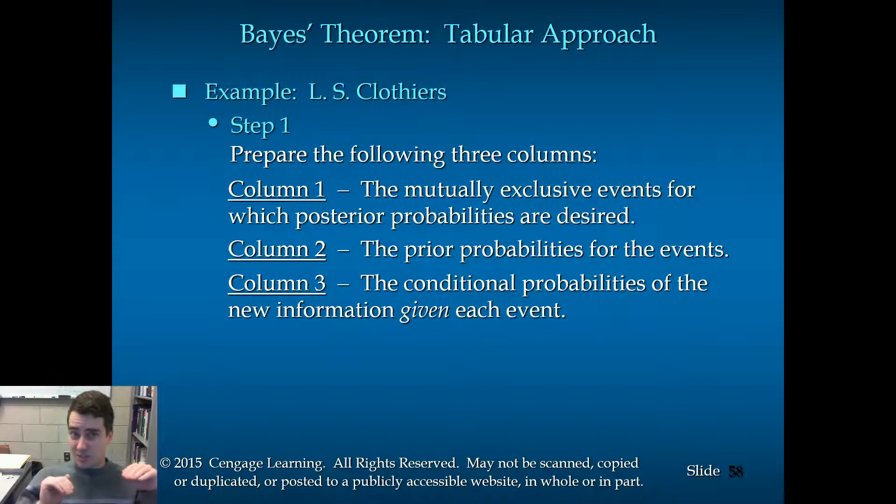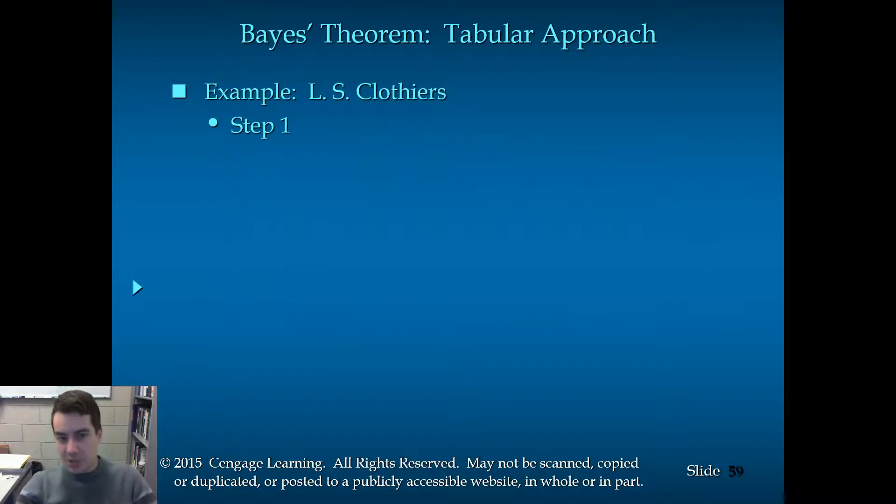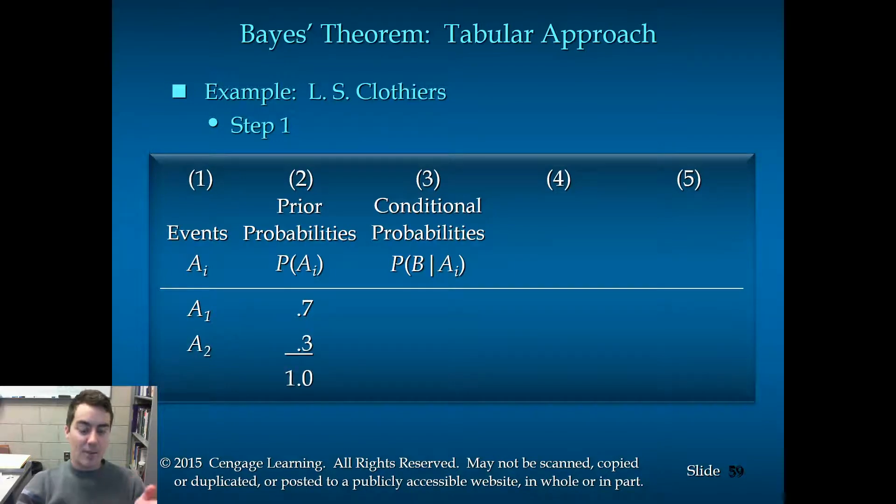So, column one, the mutually exclusive events for which posterior probabilities are desired. So, it's just a list of events. Column two, the prior probabilities for the events. So, in our case, that's the 70, 30% that we saw from the very beginning. And then column three, the conditional probabilities of the new information given the events in column one. So, those were the things that were given to us as the other given data. So, let's plug these in. So, we have events A1 and A2. Prior probabilities for A1 and A2 are 0.7 and 0.3. Which, by the way, remember, the AI is a placeholder for a number. So, AI could be A1, in which case it's 7. AI could be A2, in which case the probability is 0.3. And, we should always get 1, 100% for our probabilities.